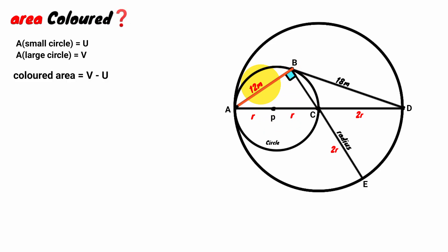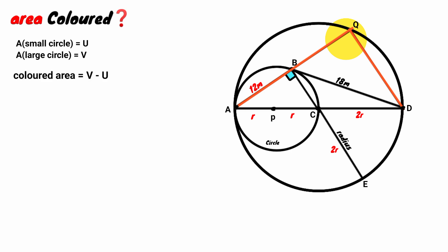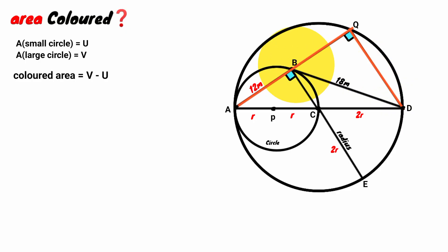Now we extend line AB to the circumference of the big circle and call the point Q, then draw a chord from Q to D. Look at angle AQD — it is also subtended by line AD to the circumference of the big circle. Line AD is a diameter of the large circle, therefore that angle is also a right angle. This chord PC is perpendicular to line AQ, and line BC is also perpendicular to the same line, which means they are parallel.